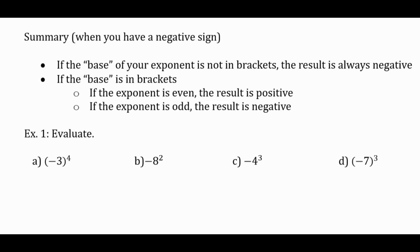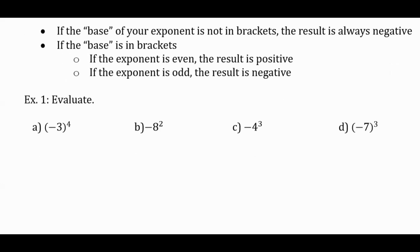Does anybody know what the first one is? 81. 3 times 3 is 9, and the other 3 times 3 is 9, and 9 times 9 is 81. Why did you think it was positive? The negative is in the brackets and there are four of them. 3 times 3 is 9, 9 times 3 is 27, and 27 times 3 is 81. When in doubt, you can always write it out.